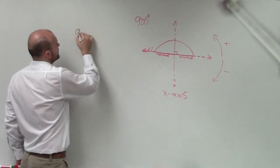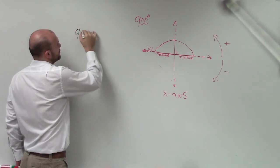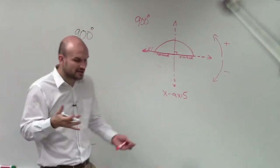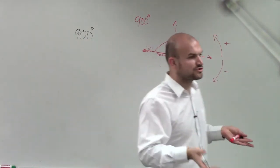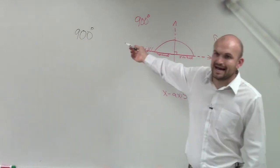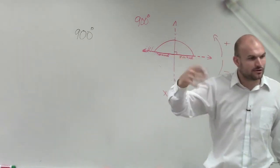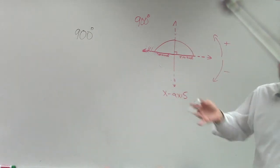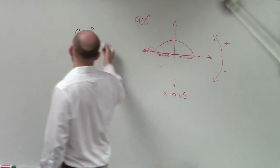So ladies and gentlemen, when you have coterminal angles, you're going to want to add or subtract. But I don't want to add to 900. I want to find smaller angles. And since my angle is larger than 360, I'm going to want to keep on subtracting.